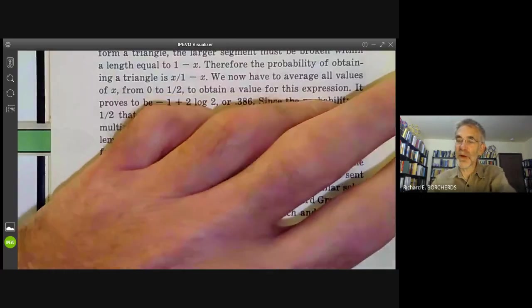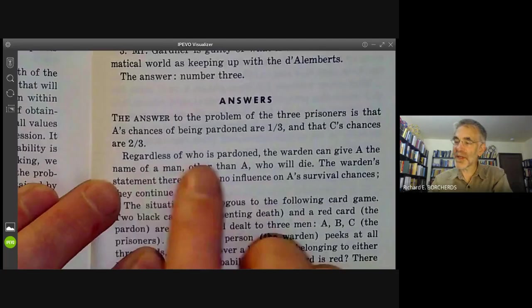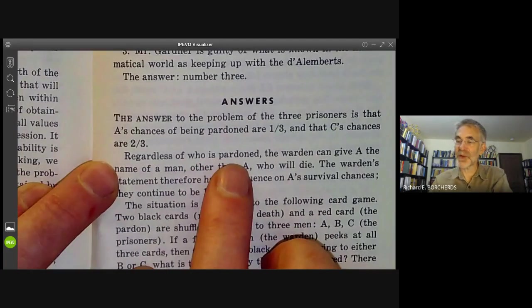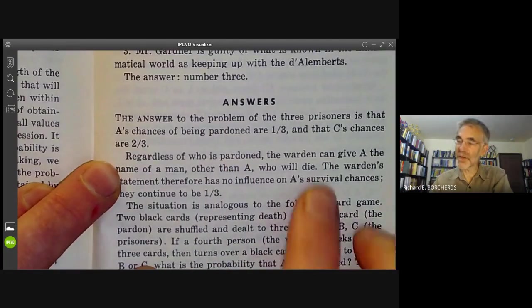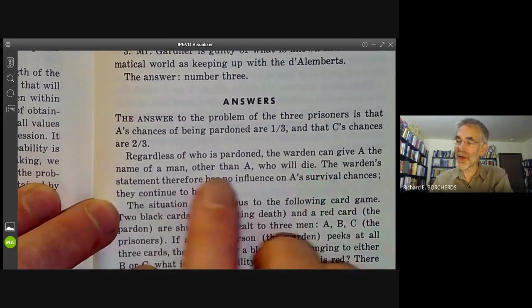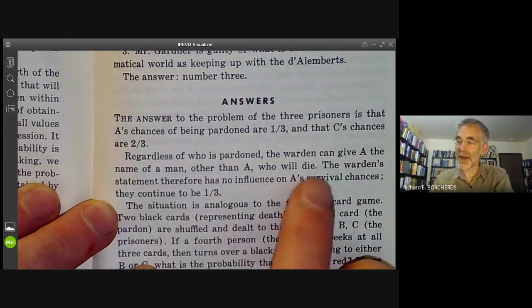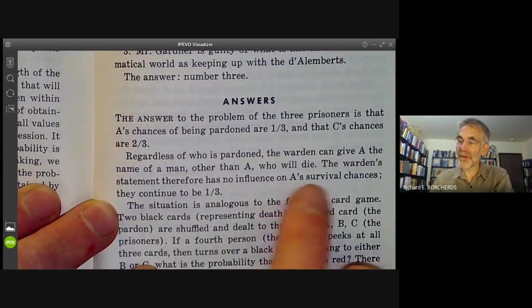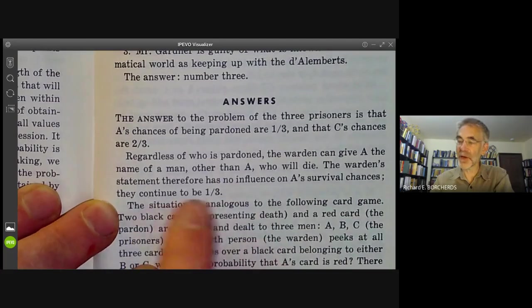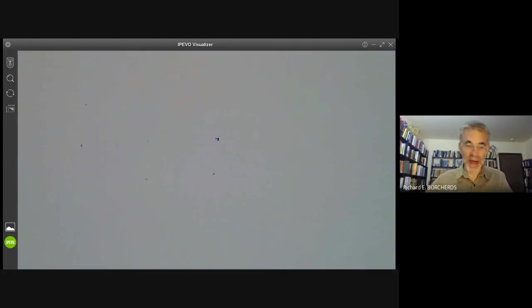Martin Gardner gave a very brief, correct solution. You can see it here. He says, regardless of who is pardoned, that means regardless of where the car is in the Monty Hall version of the problem, the warden can give the name of a man who will die. Well, that means Monty Hall can open a door that has a goat behind it. And Martin Gardner then points out that opening the door has no influence on the first, that the door you chose having a goat behind it. So Martin Gardner gave the problem and gave a correct solution back in 1959.